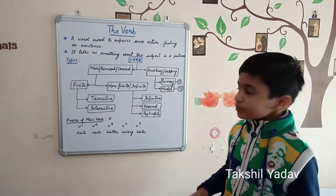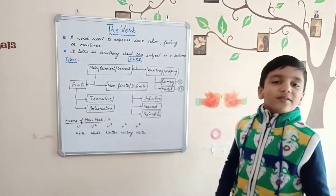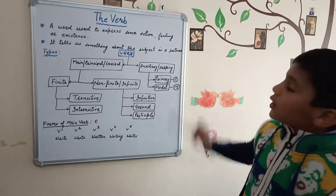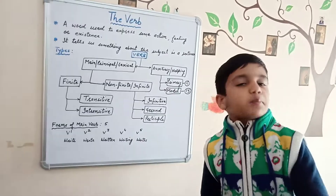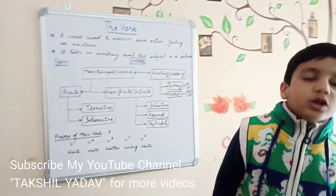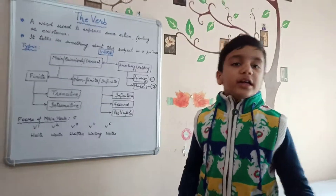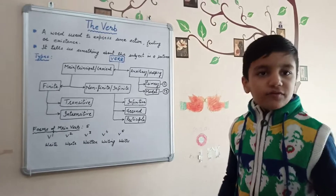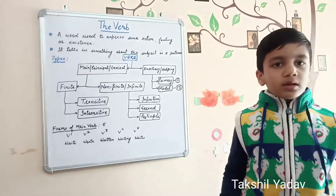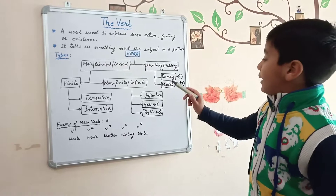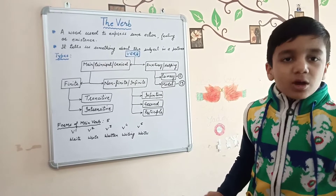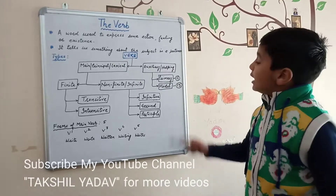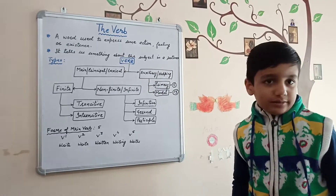Auxiliary or helping verbs are the verbs that, as their name suggests, help the main verb in forming tenses. There are twenty-four auxiliaries in total, and they are of two types: primary and modal. Primary auxiliaries are eleven in number, and modal auxiliaries are thirteen in number.